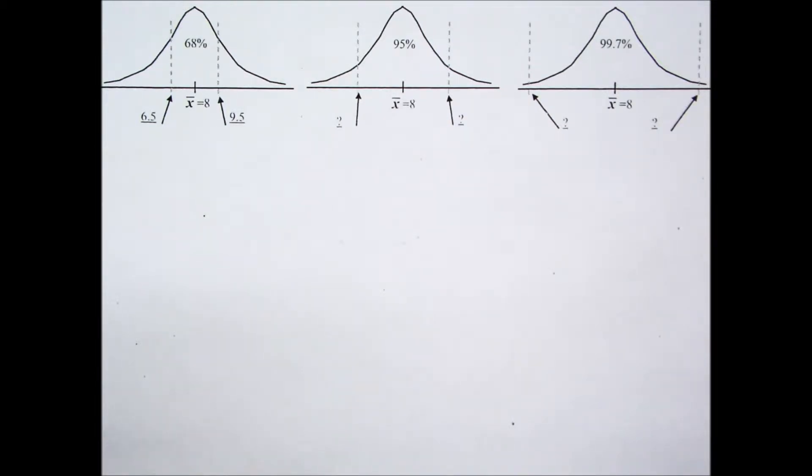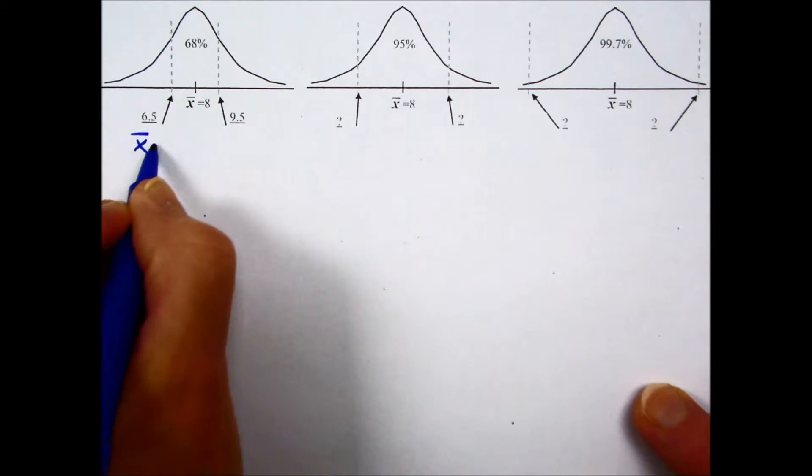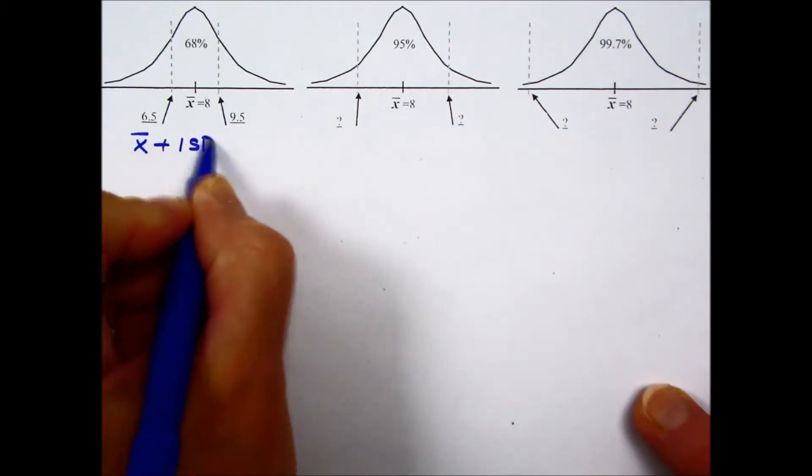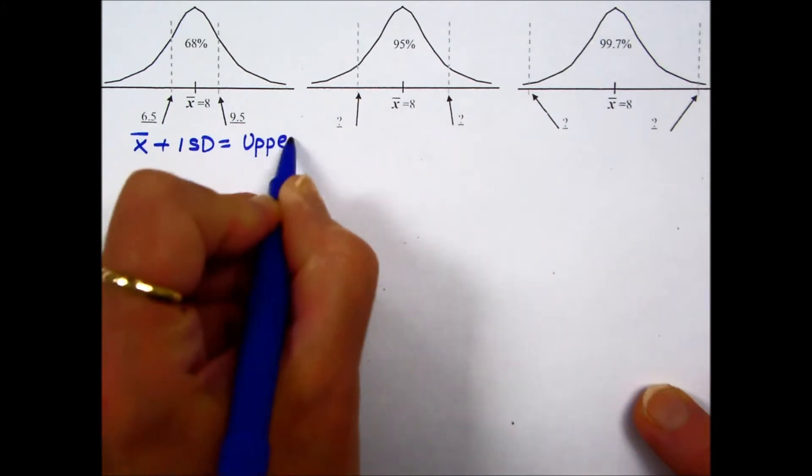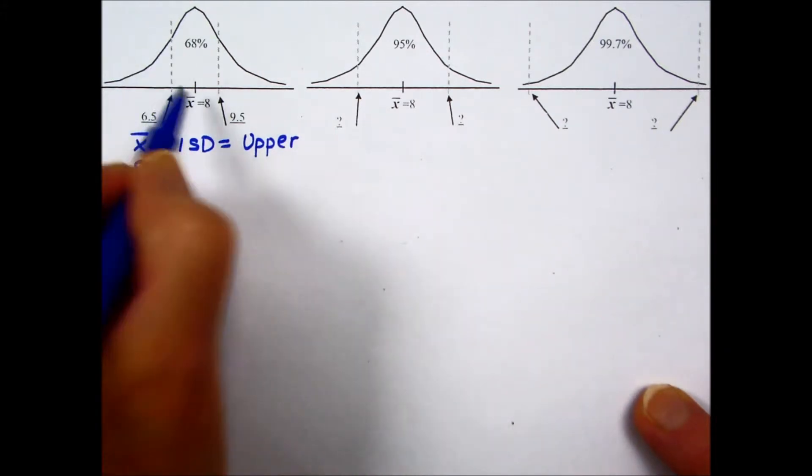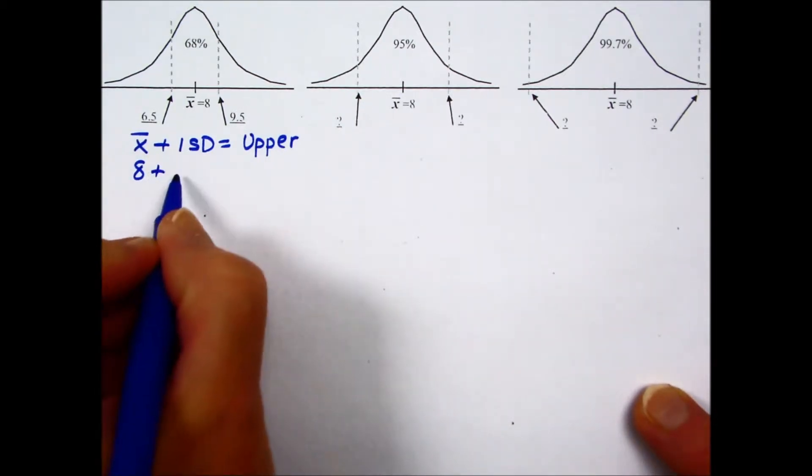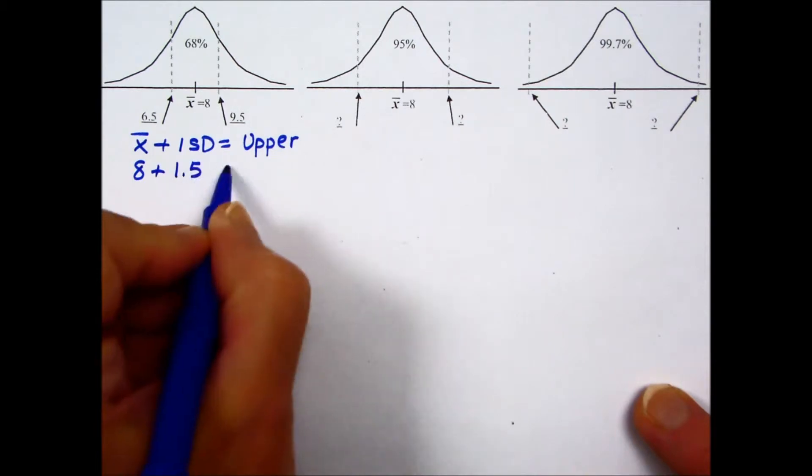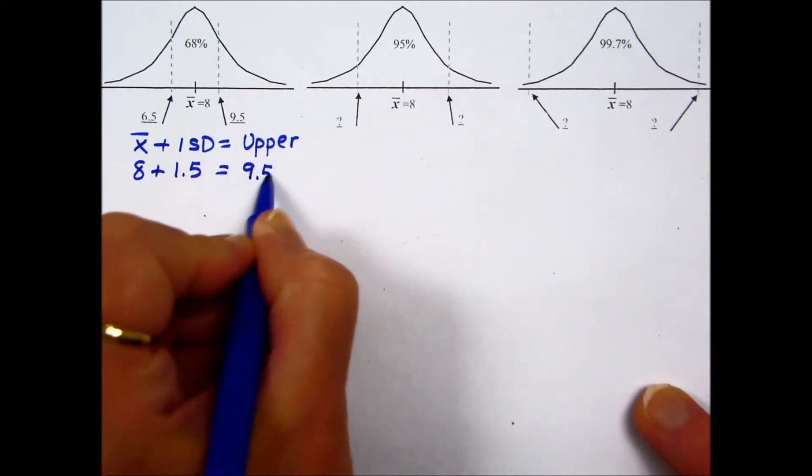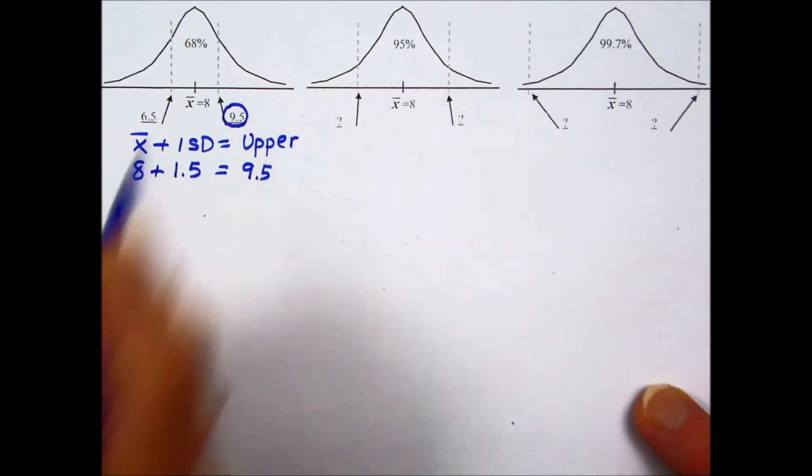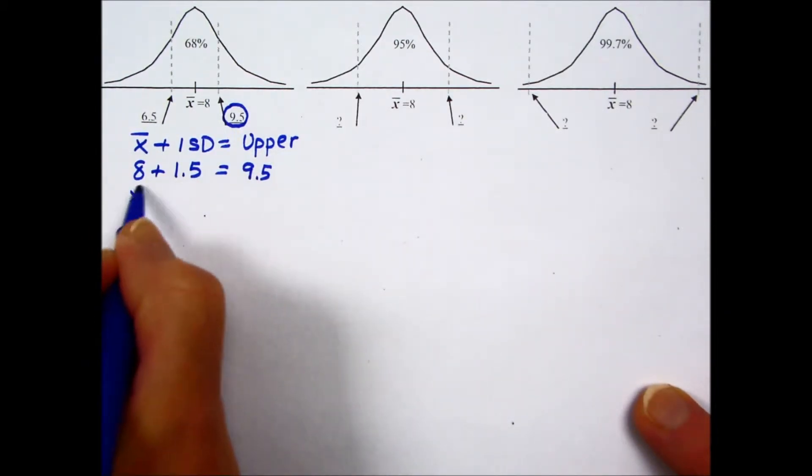Well, let's check those values on the first one. If we're looking for 68% of the data and the boundaries for that, we would take the mean plus one standard deviation to determine the upper boundary. The mean given in this problem is 8. The mean will always be at the center point of a bell-shaped or normally distributed set of values. The standard deviation given in this problem was 1.5. Adding those, we end up with 9.5 and that is the upper boundary for 68%.